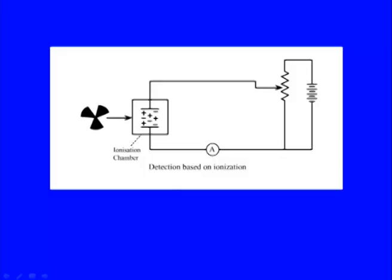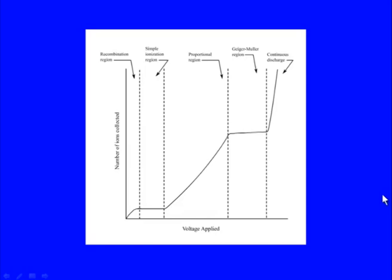Let us look at a curve showing the effect of voltage upon ionization and the different regions. A simple schematic shows a radioisotope sample, an enclosed chamber where radiation enters, two electrodes, and the radiation creating positive ions and electrons. With an applied potential, both positive and negative charges rush towards their respective electrodes and current flows. This is the basic schematic of a measuring device based upon gas ionization.